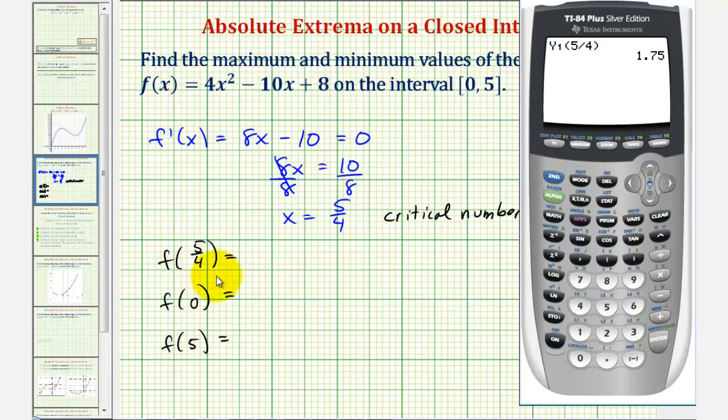So f of five fourths is equal to 1.75, or as a fraction, seven fourths.